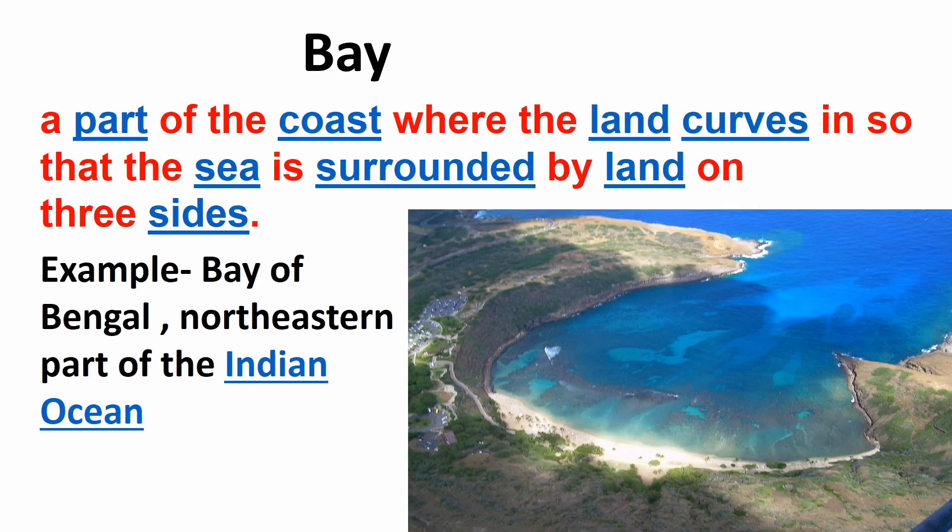Bay: A part of the coast where the land curves in so that the sea is surrounded by land on three sides. Example, Bay of Bengal.